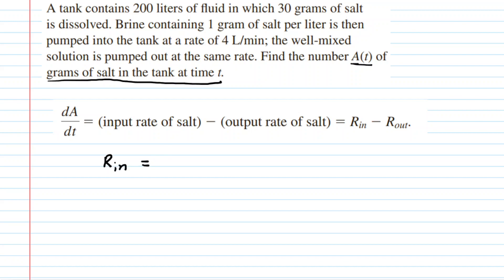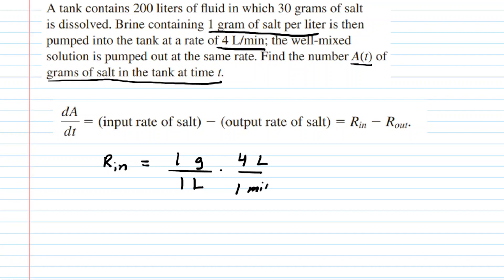We're going to do some dimensional analysis. We are told that this brine contains one gram of salt per liter, and that it's being pumped into the tank at a rate of four liters per minute. We take that one gram of salt per one liter — that's a concentration — and multiply it by the pumping rate into the tank, four liters per minute. The liters cancel out, and we're left with four grams per minute.